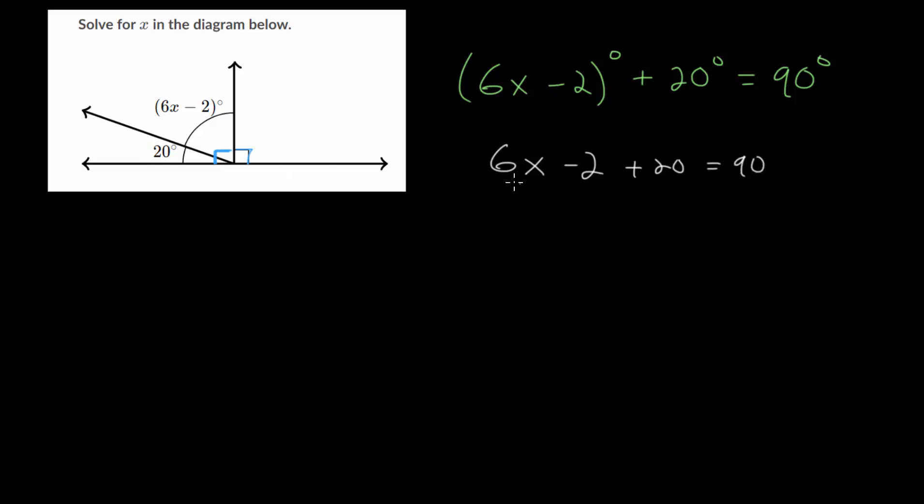Let's combine like terms. So notice that we have minus 2 plus 20, so that would just be plus 18. And now we just have this two-step equation, where we want to get x by itself. So we need to cancel out the multiplication by 6 and the addition by 18. It's simpler to get rid of addition and subtraction first. So let's subtract 18 on each side, so that we get 6x is 90 minus 18, which is 72.